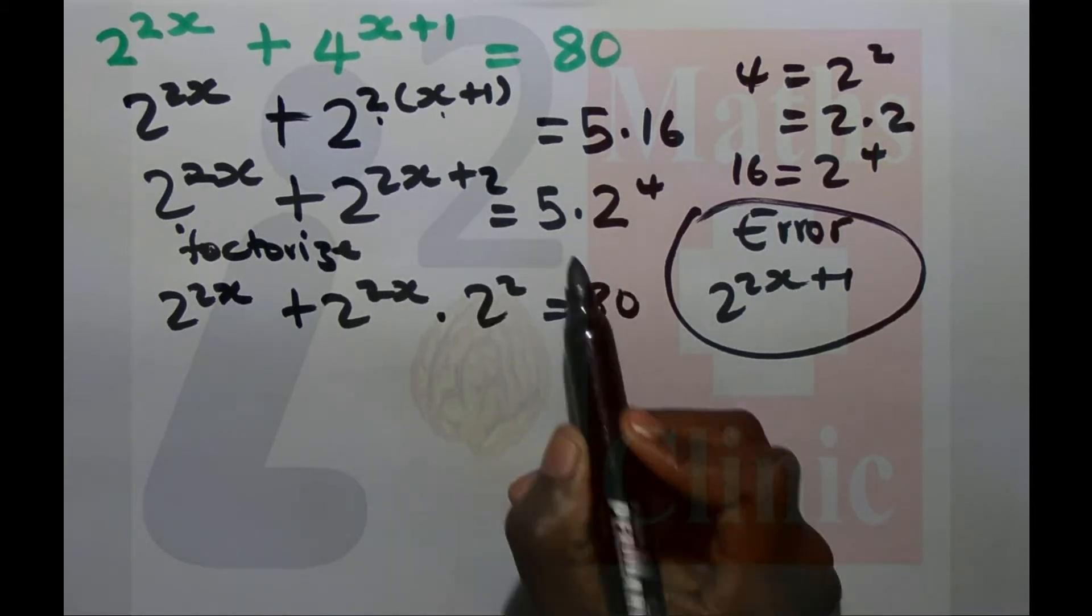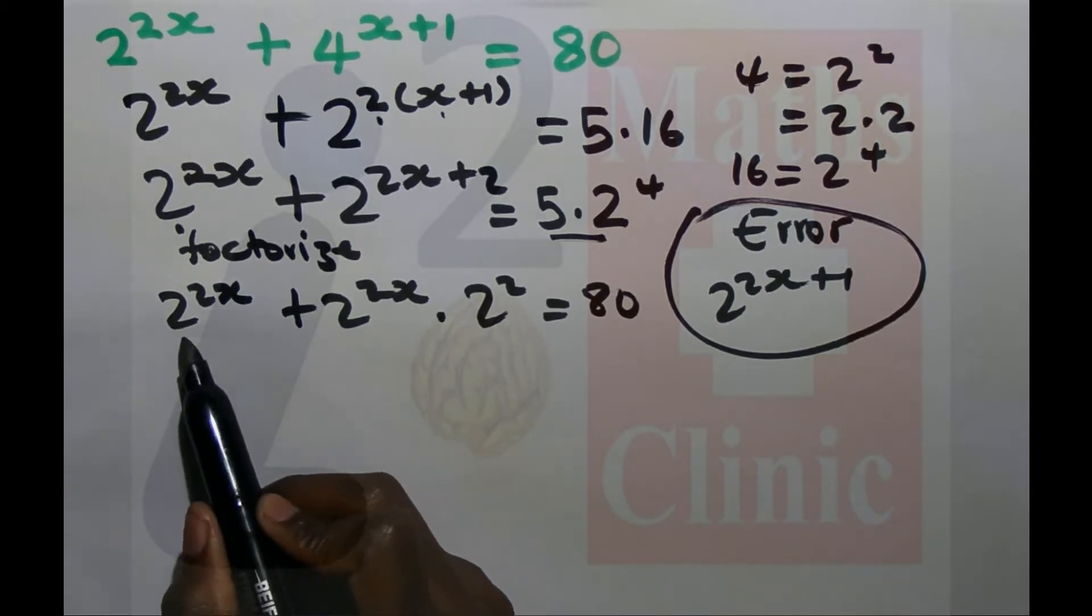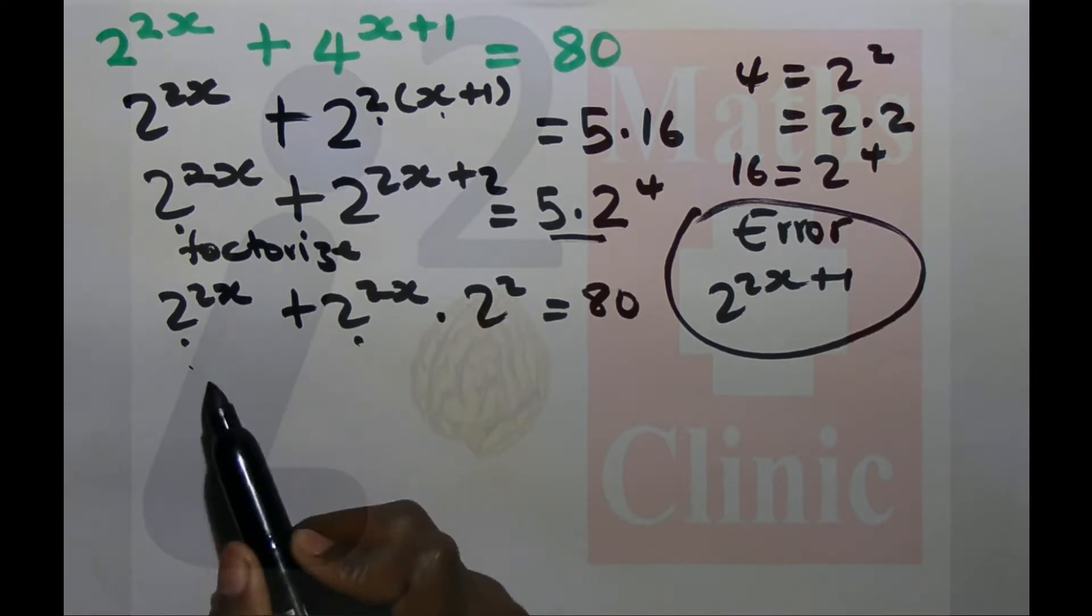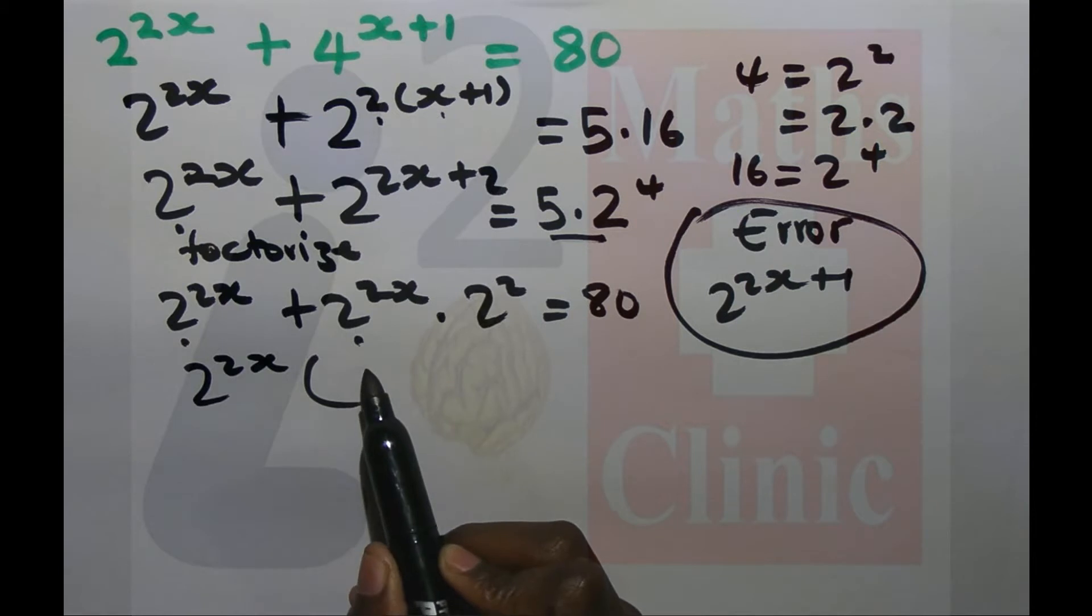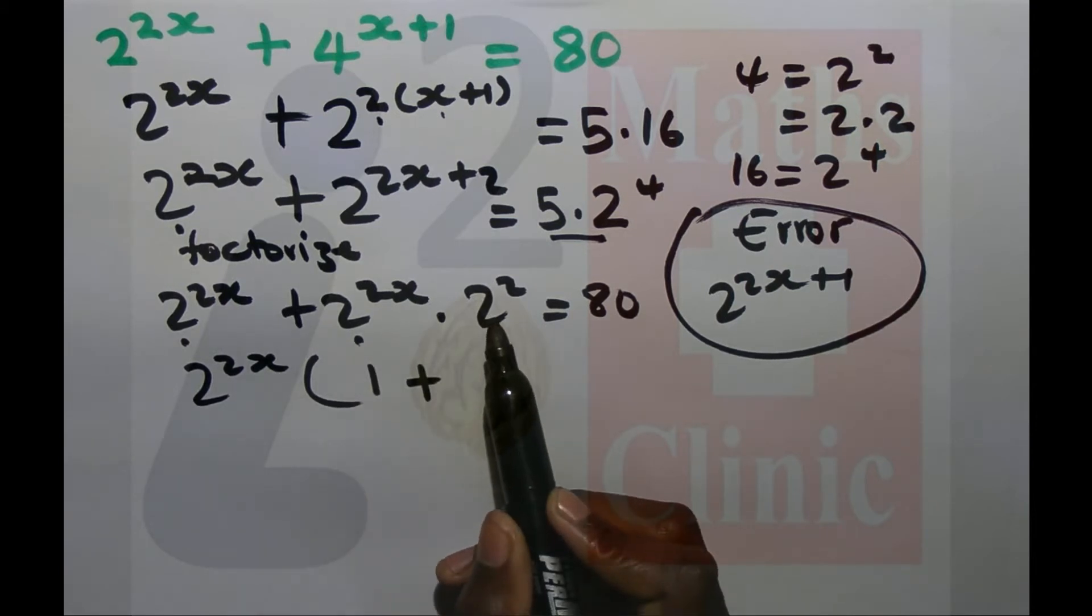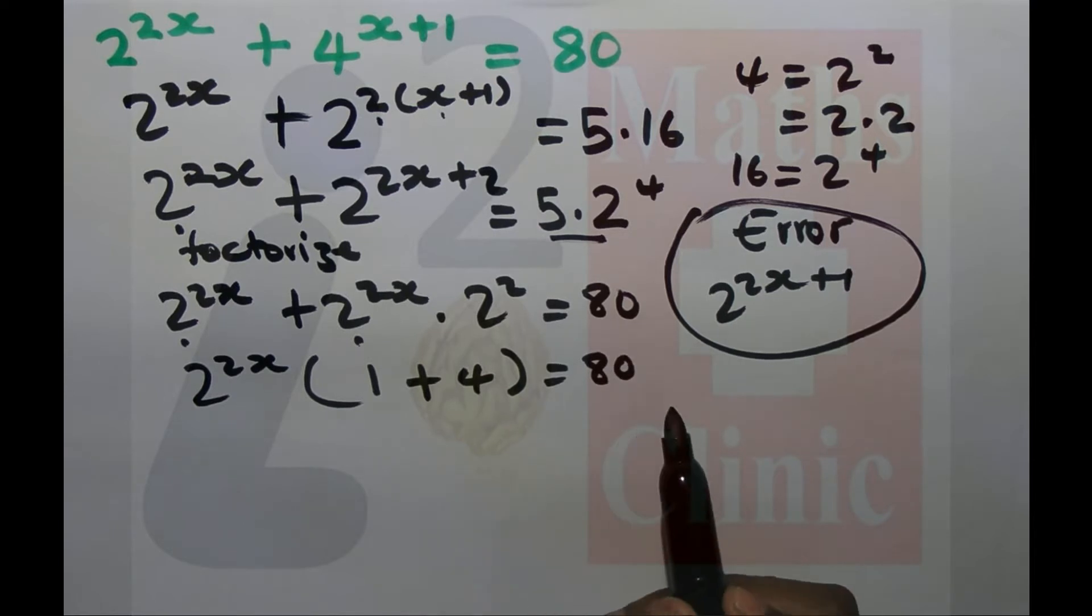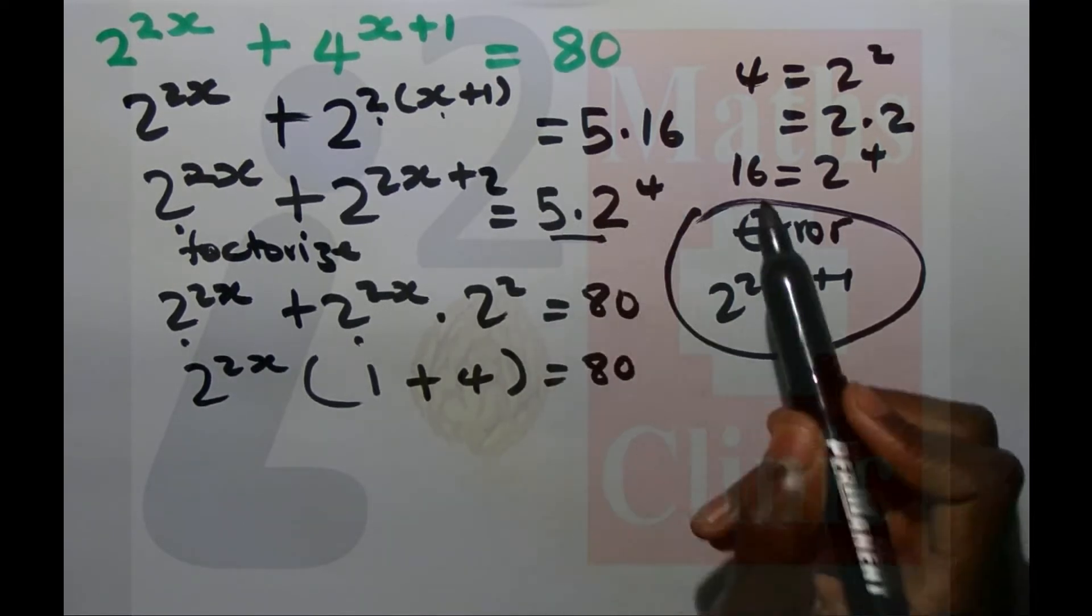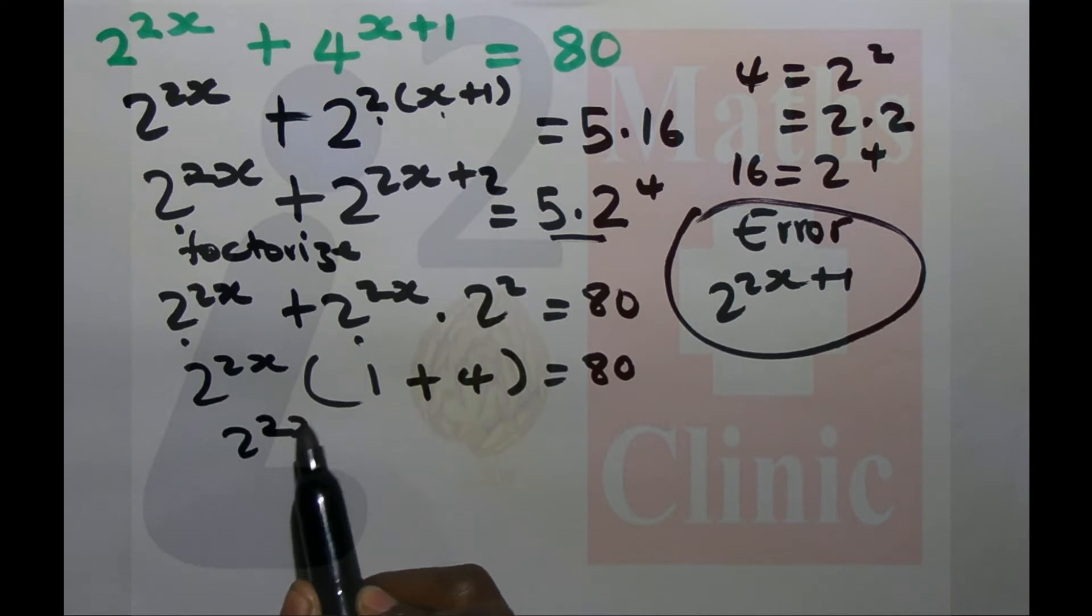Factorize with the common factor. So it's 2 to the 2x times 1 plus 4, which equals 5. So it's 2 to the 2x times 5 equals 80.